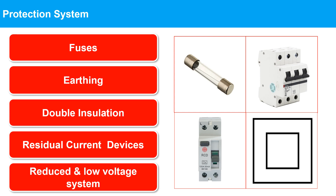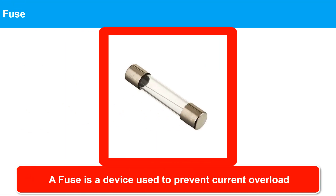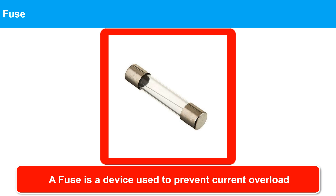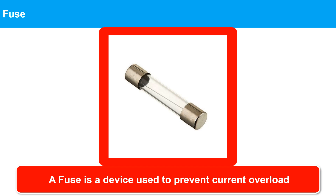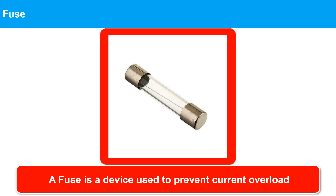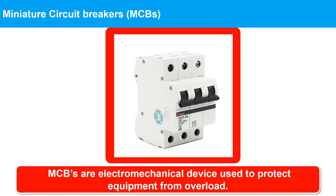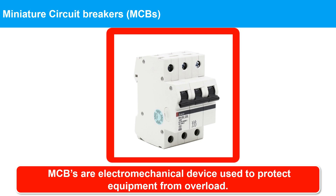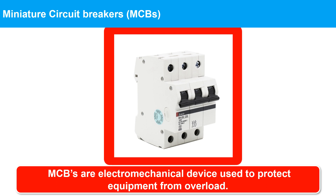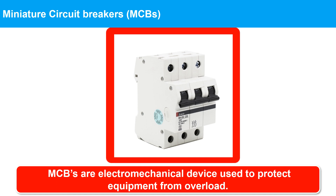A fuse is a device used to prevent current overload. A simple fuse is made of two metal caps joined by a thin piece of fuse wire. When incorporated into an electrical circuit, current flows through the wire; if the current is too great for the fuse wire rating, the wire becomes hot and melts, breaking the circuit. Miniature circuit breakers (MCBs) are electromechanical devices that work similarly to fuses to protect equipment from current overload, but an MCB does not melt — it simply trips out and can be reset by pressing a button.